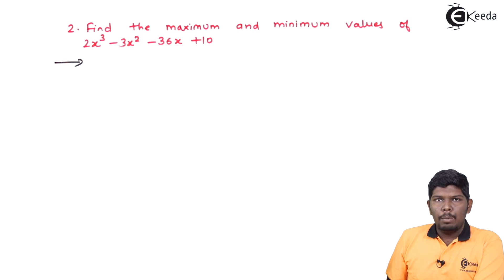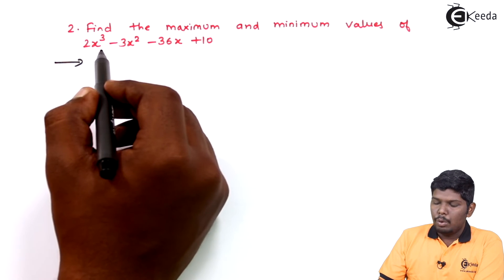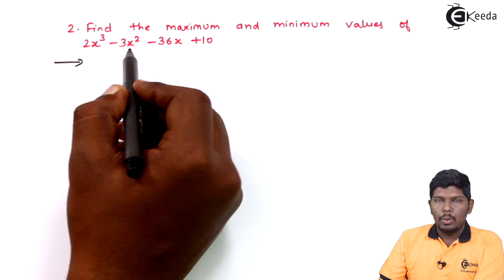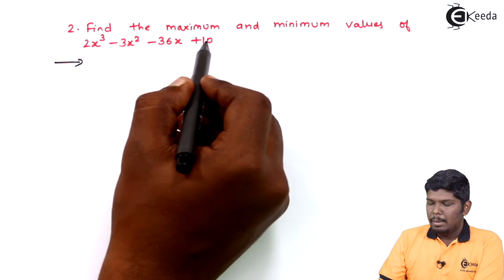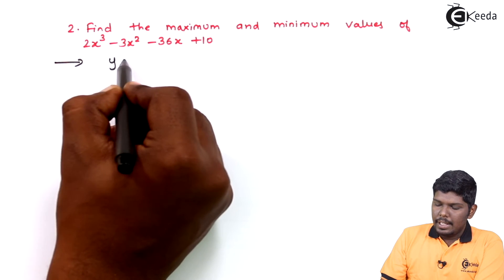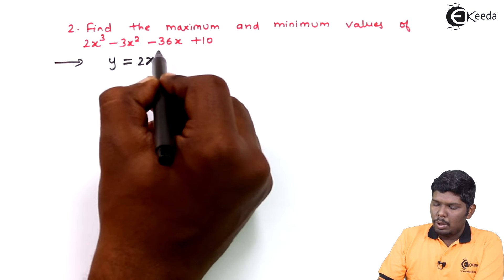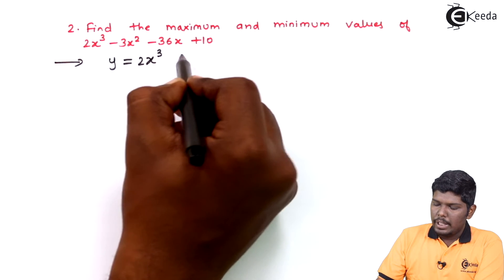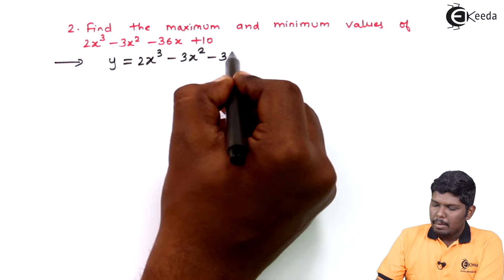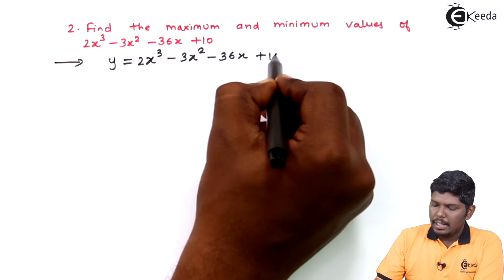In the second problem, find the maximum and minimum values of 2x³ - 3x² - 36x + 10. Let us consider this function as y, so y = 2x³ - 3x² - 36x + 10.